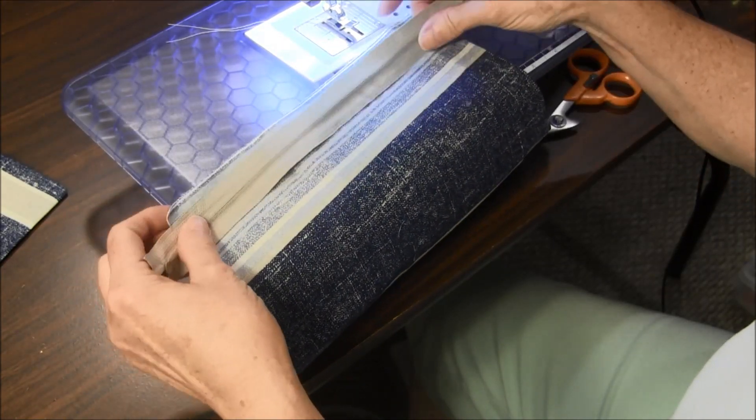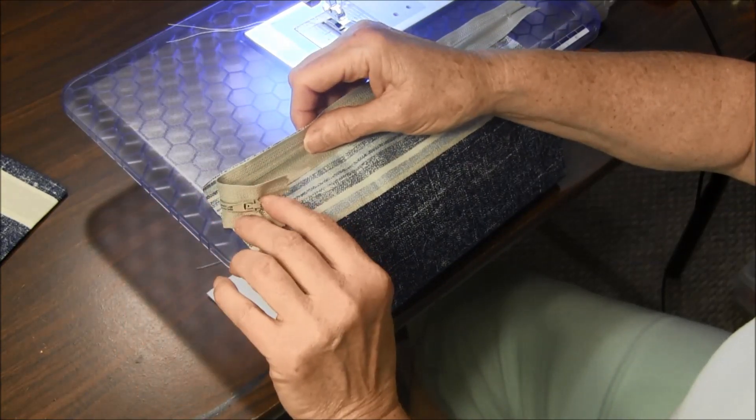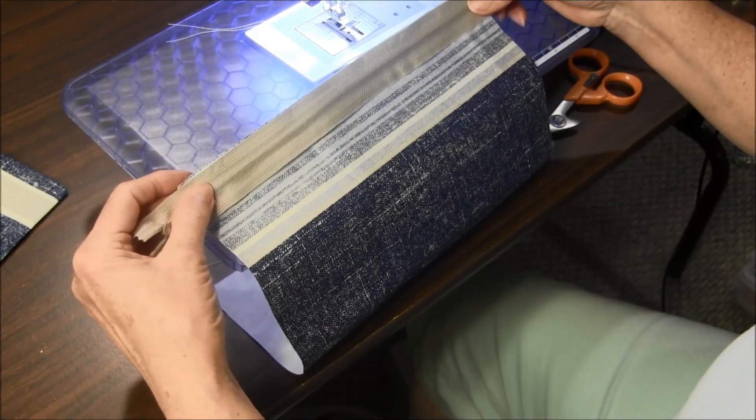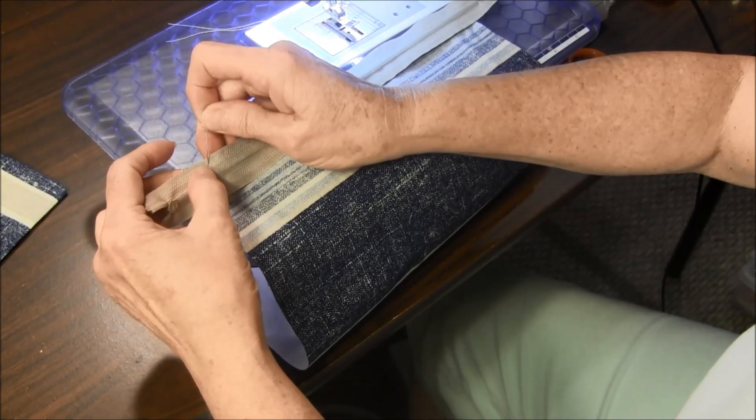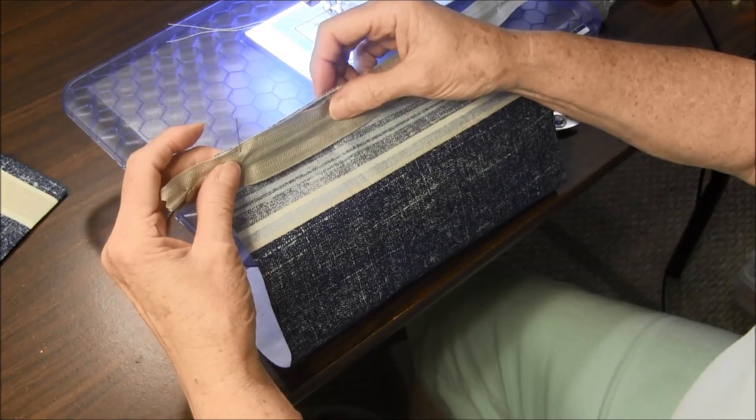The first thing you're going to do is place the zipper on the end of the fabric with the zipper pulled down and you're going to extend it past the fabric. And I'm going to put a few pins to keep it in place.